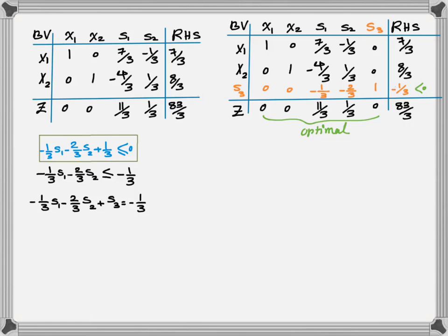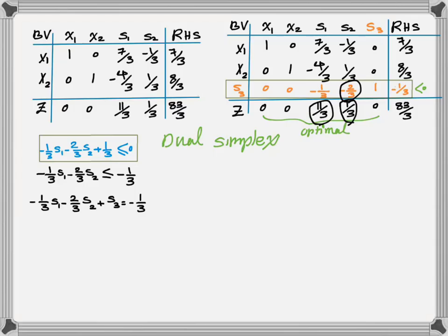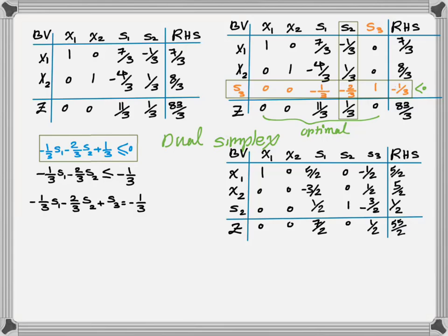For the dual simplex method, we look for the most negative value in the right-hand side and implement the minimum ratio test on the negative values of the pivot row. In this case, negative 1/3 and negative 2/3 are the negative values. We divide 1/3 by 2/3 and 11/3 by 1/3, using absolute values, and find the minimum. If you need a refresher, please go back to my video on how to solve a linear programming problem using the dual simplex method. Implementing the min test, s2 becomes the pivot column. I iterate the table, making the pivot element negative 2/3 equal to 1 and all other elements in the pivot column equal to 0. In the new table, nothing in the right-hand side has turned into an integer value.